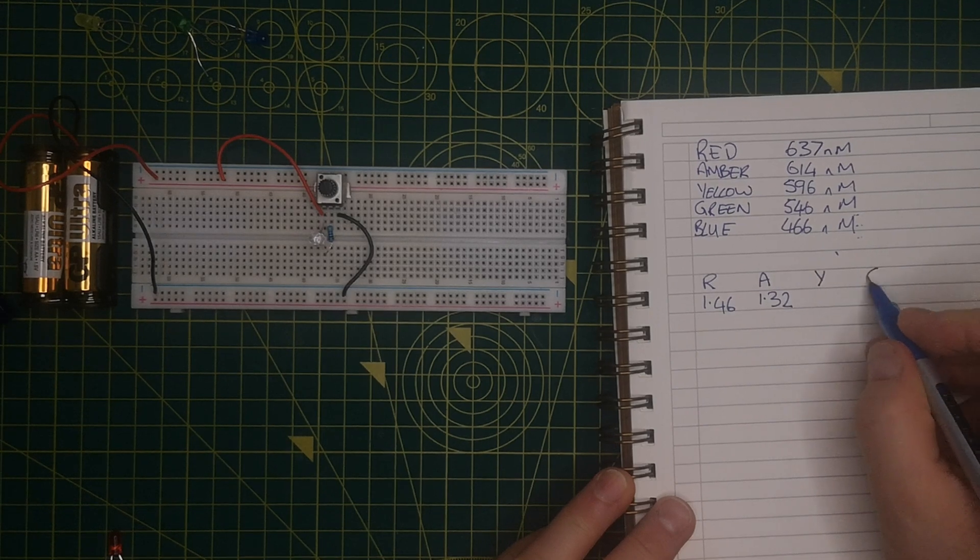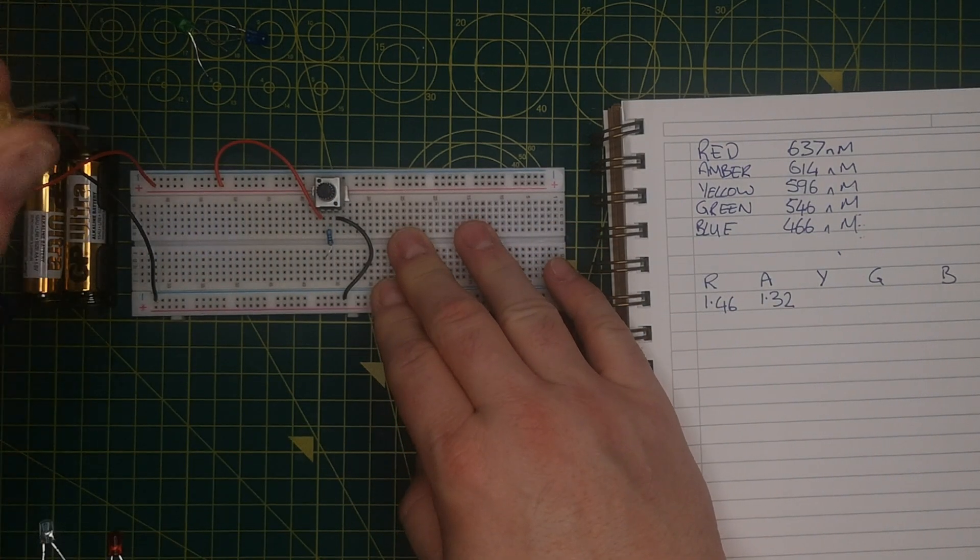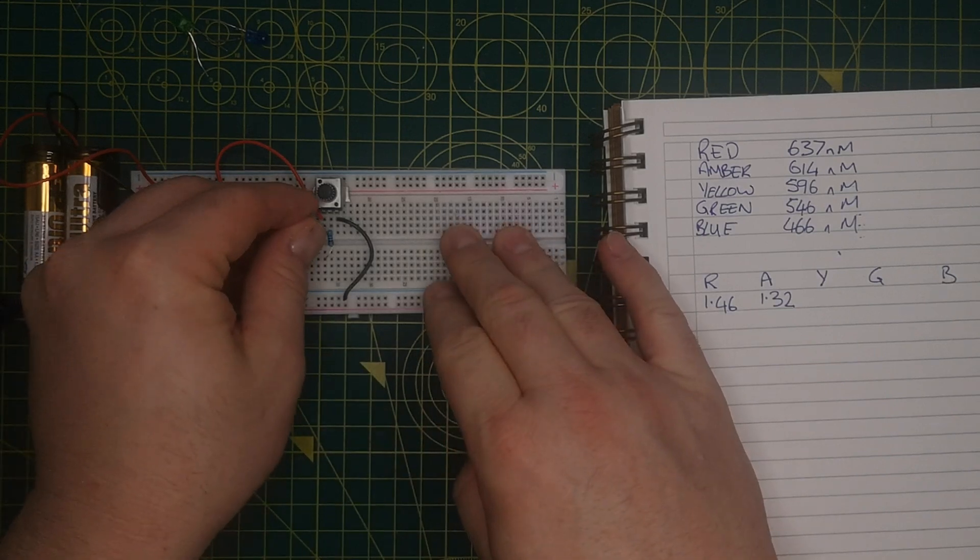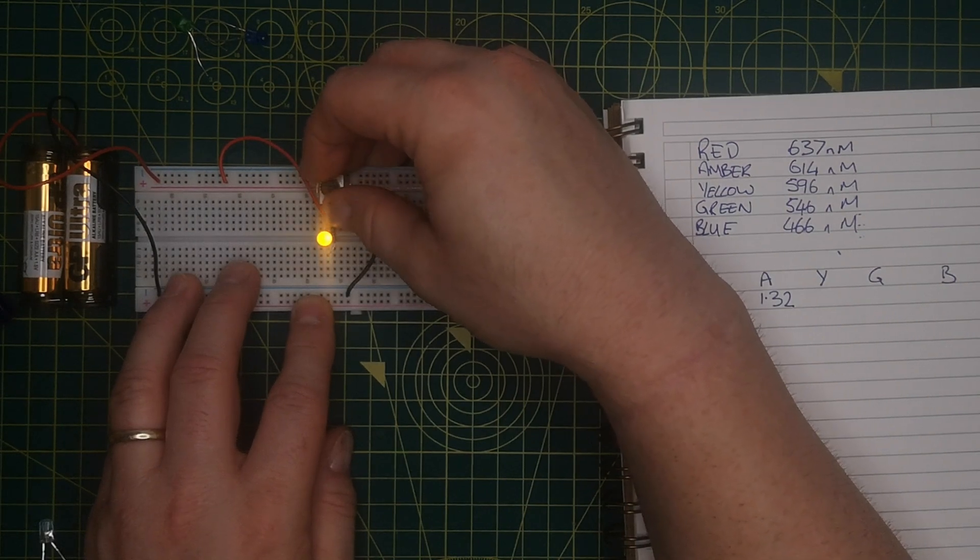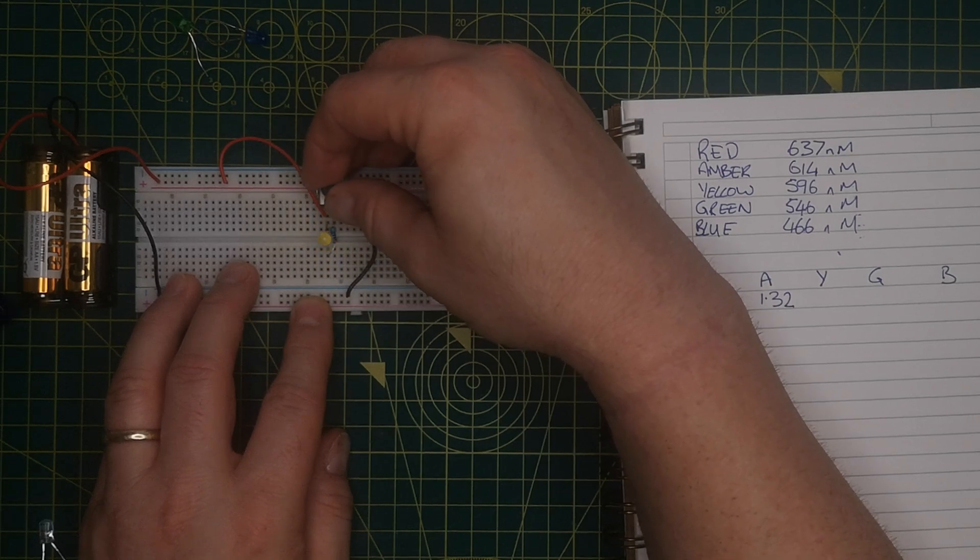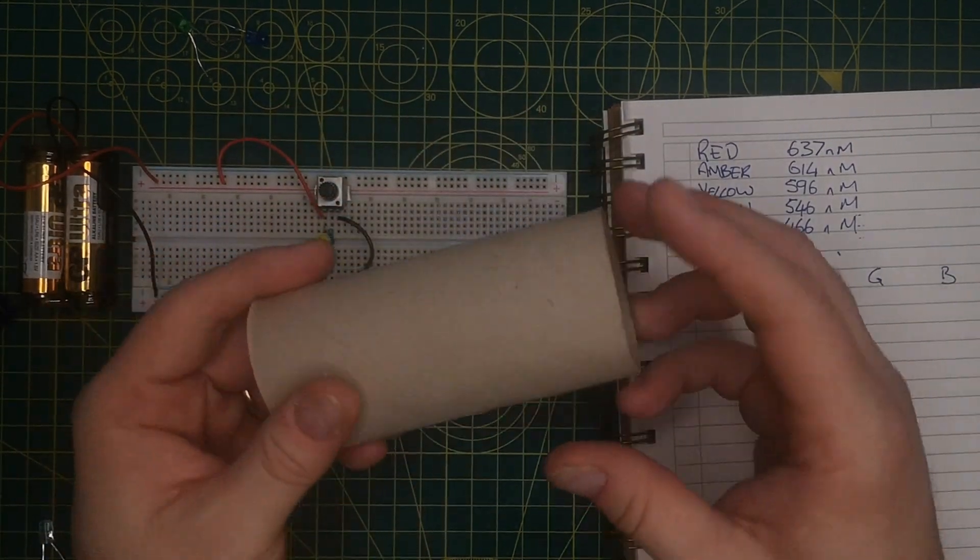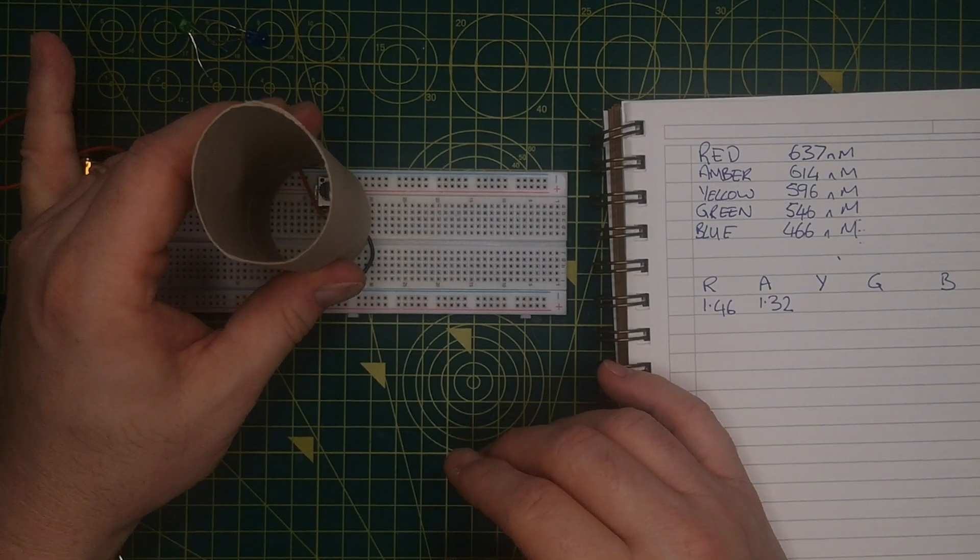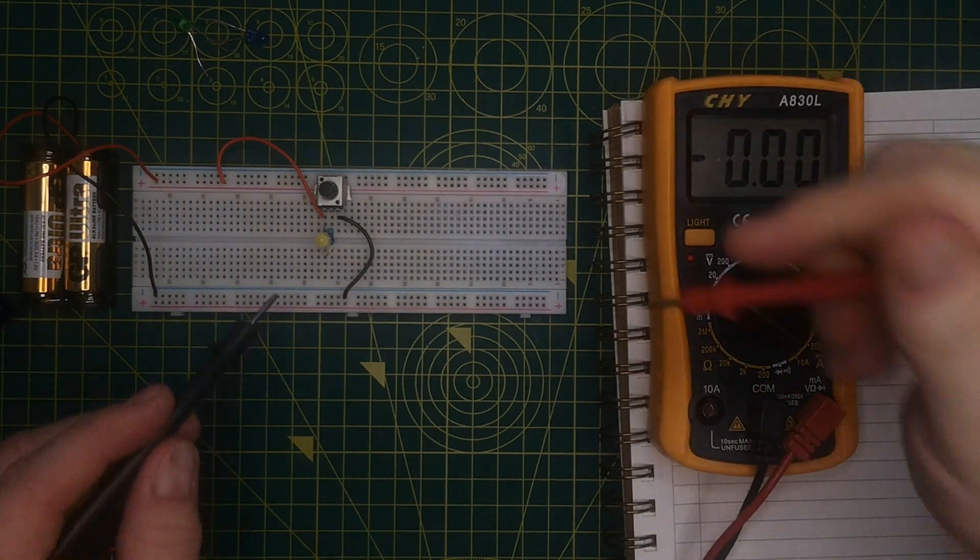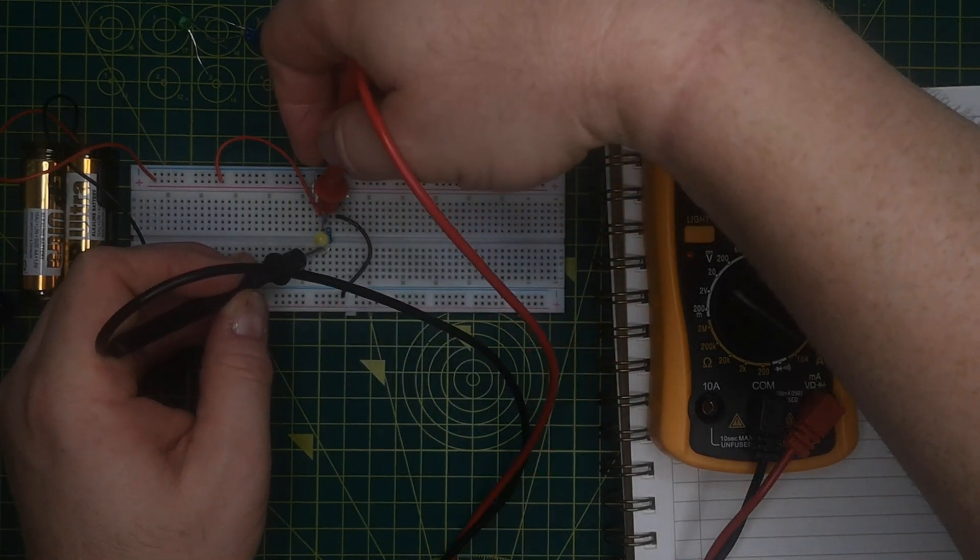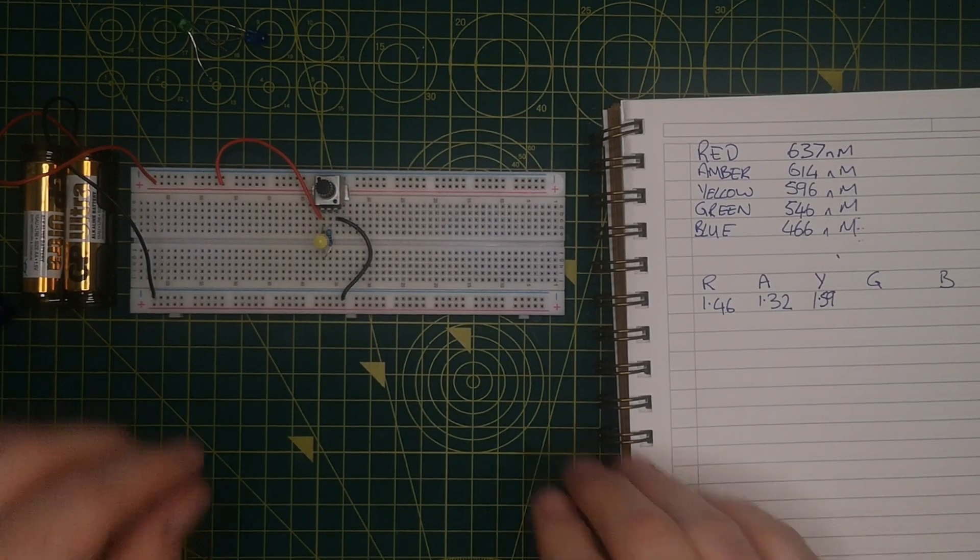So amber is 1.32. We'll have yellow, we'll have green, and we'll have blue. So I get rid of the amber, and I'm going to put the yellow in. The yellow with the positive leg, the long leg, in the right orientation. And I can twist until the LED lights, which you can see there. And I'm going to twist until the LED goes off, which is about there. Now, if you're doing this in class, a toilet roll tube is really helpful to hold over the LED to block out the light to get a bit more accuracy in terms of the voltage at which the LED goes out. So if I measure across there, that's 1.59 volts for yellow. 1.59. I begin to think the amber one was a bit low, but never mind.